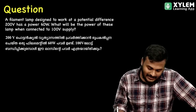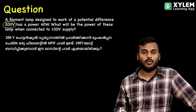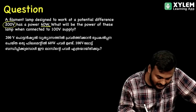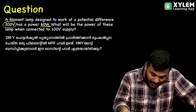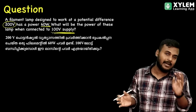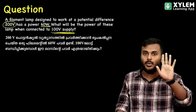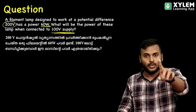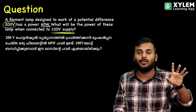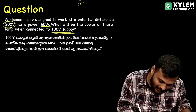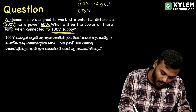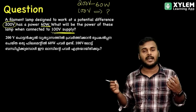A filament lamp is designed to work at a potential difference of 200V rated at 60W. What will be the power of these lamps when connected to 100V supply? So the voltage is 200V and the power is 60W. This filament lamp is connected to 100V supply. It's simple.